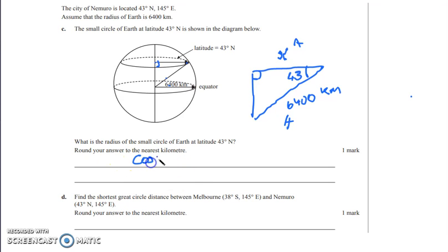So cos 43 is going to equal x over 6400, so adjacent over hypotenuse. This would mean that x would equal, if we plug that into our calculator using the solve function, or we calculate it by hand, would be 4680.66369, where the answer is asked to the nearest kilometer, which is equal to 4681 kilometers.